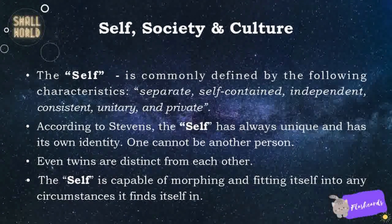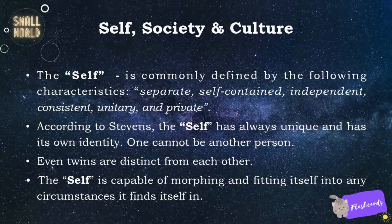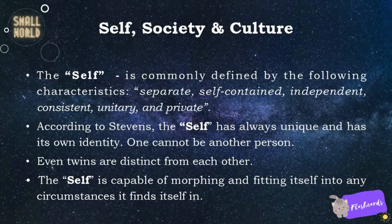The self is commonly defined by the following characteristics: separate, self-contained, independent, consistent, unitary, and private. According to Stevens, the self is always unique and has its own identity. One cannot be another person — even twins are distinct from each other. The self is capable of morphing and fitting itself into any circumstances it finds itself in.